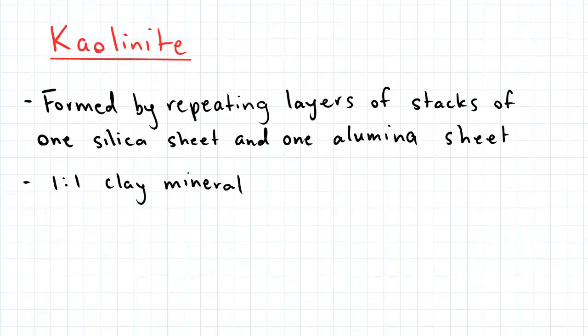So kaolinite is formed by repeating layers of stacks of one silica sheet and one alumina sheet. This is known as the one-to-one clay mineral.